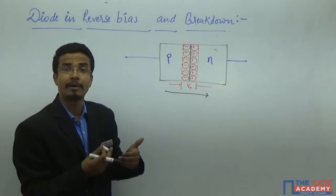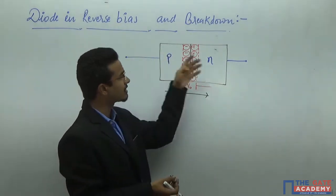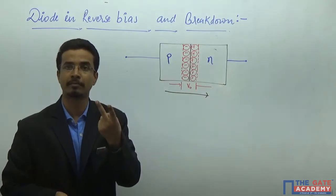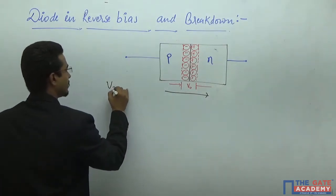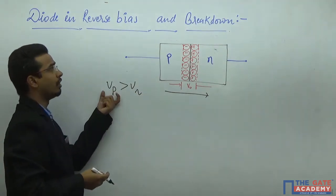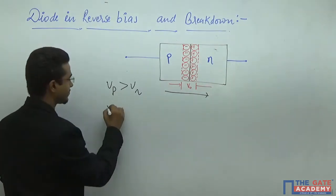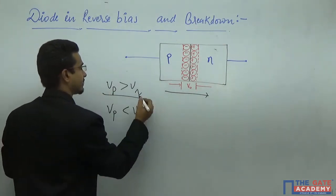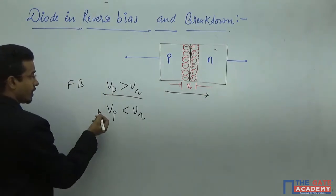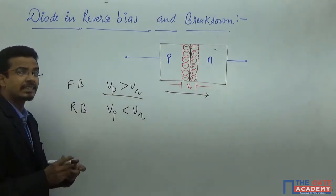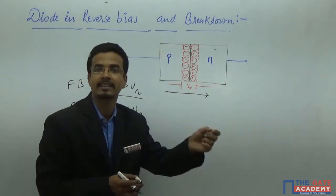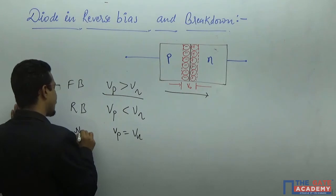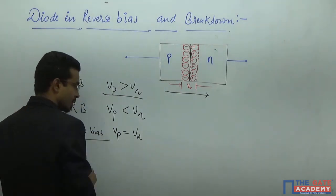The charge carriers should flow — holes from the P side to the N side, and electrons from the N side to the P side. There are only two terminals, so only two possibilities: Vp greater than Vn, which is the forward bias situation, or Vp less than Vn, which is the reverse bias situation. Whenever Vp equals Vn, that is the no-bias condition.